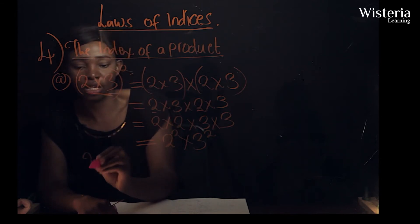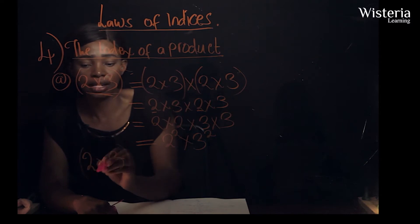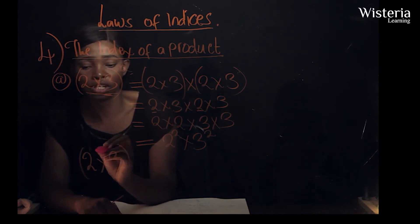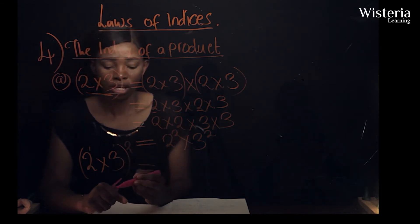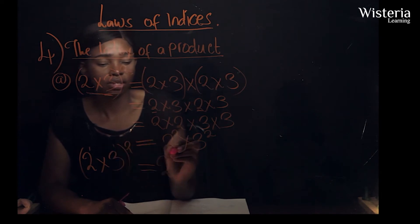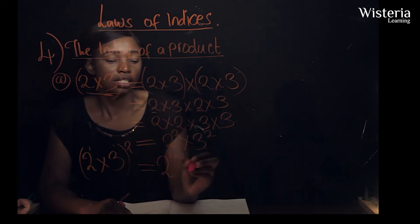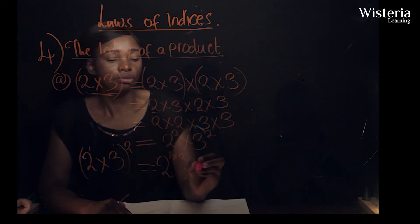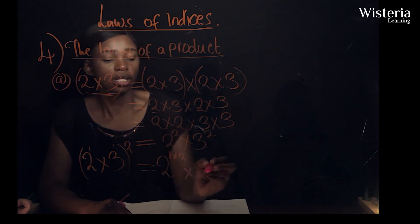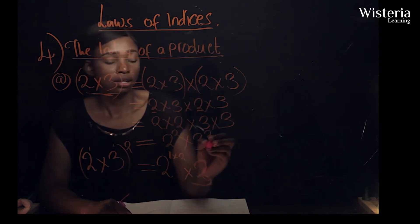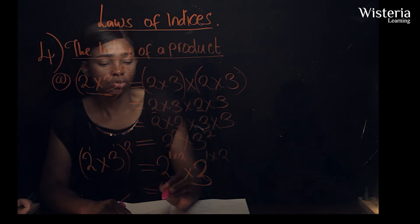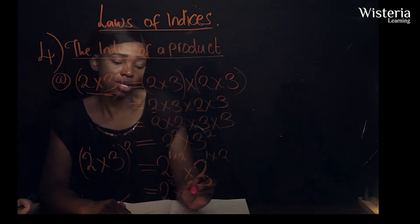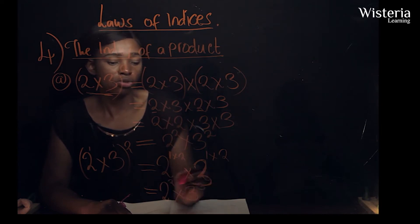So for example with two times three to the power one — there is a power one which a mathematician should be able to see — we multiply each base by the outer power. So it will be two to the power one times two, giving two to the power two, times three to the power one times two, giving three to the power two.